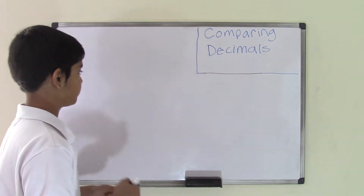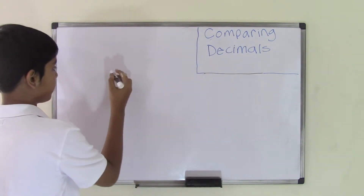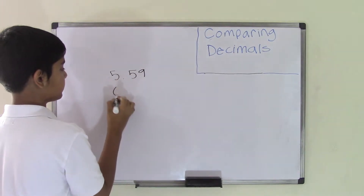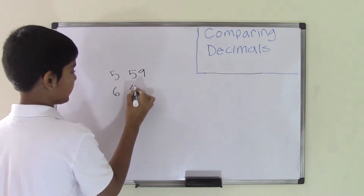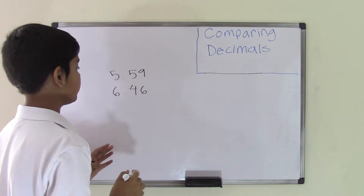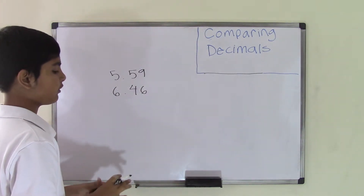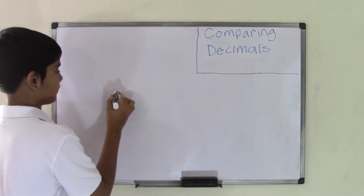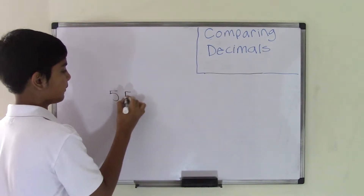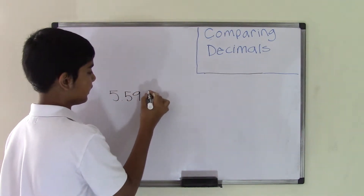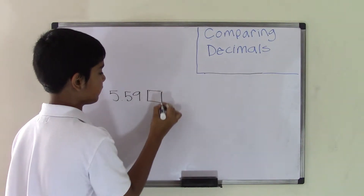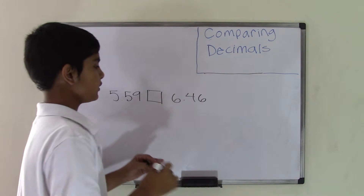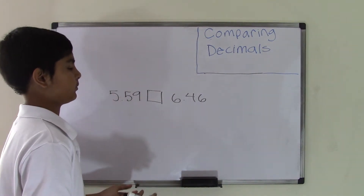Let's say we have the two numbers: 5.59 and 6.46, and we have to compare these. We're going to put them in comparison form by writing them vertically — 5.59, and this is where our symbol will go, and 6.46.